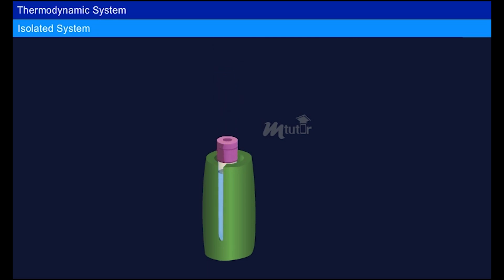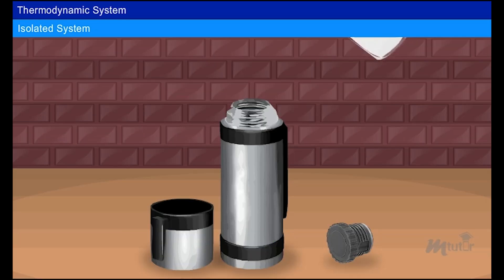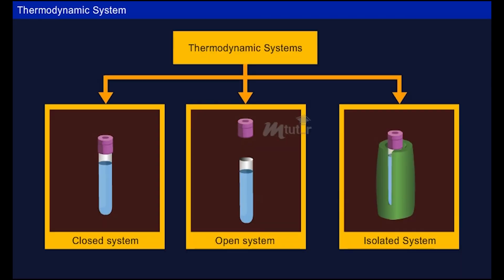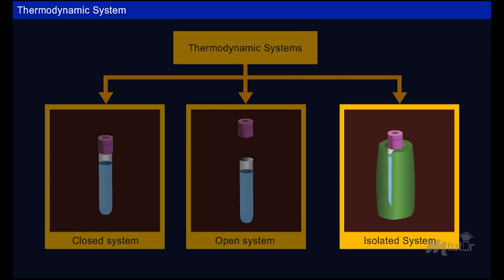An isolated system is one which is not affected by its surroundings — no heat, work, or mass transfer takes place. For example, when hot milk is poured into a thermal flask, the outer surface is insulated, and thus no heat and mass transfer takes place from the flask to the surroundings. This is called an isolated system. The types of thermodynamic systems are: closed system, open system, and isolated system.